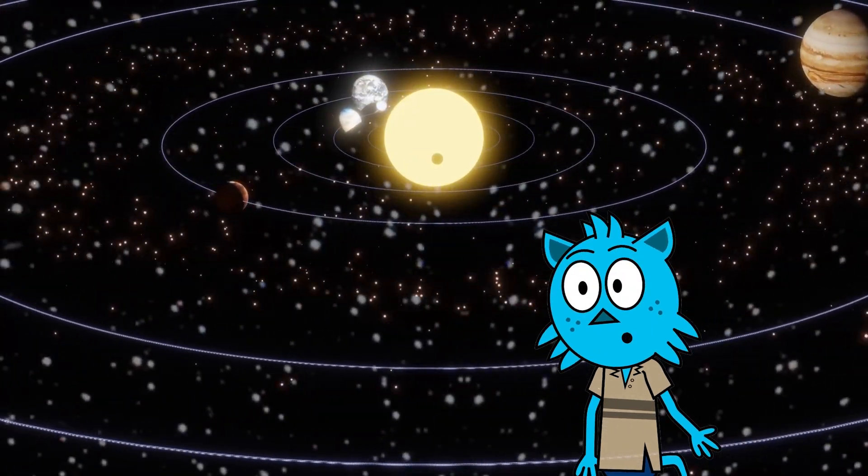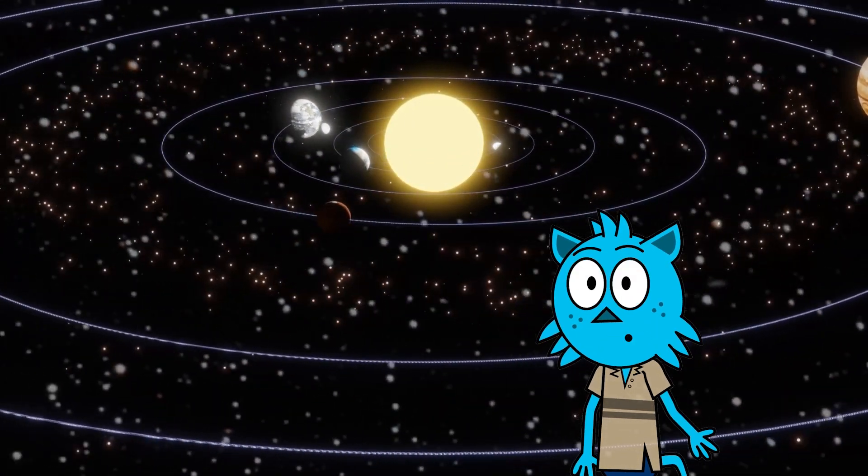Our solar system is like a big family with the sun as the parent, and the planets as its children.